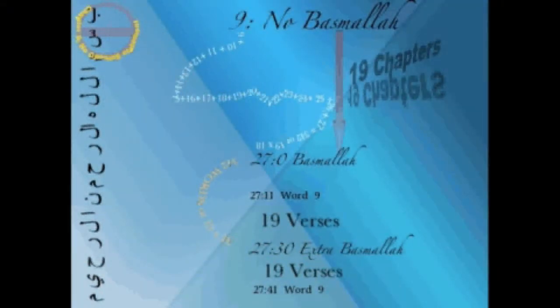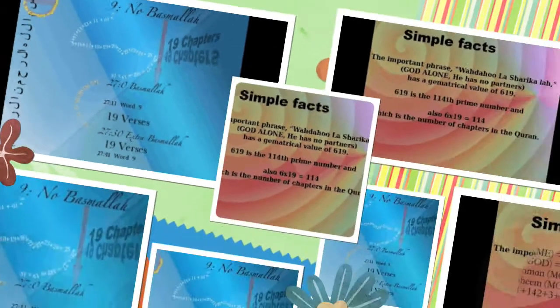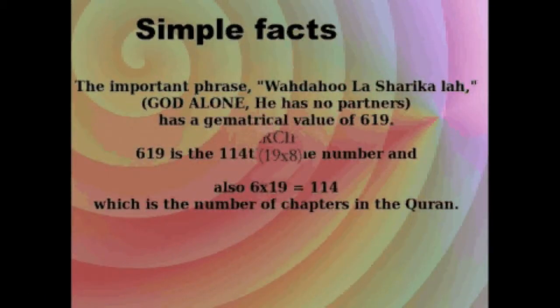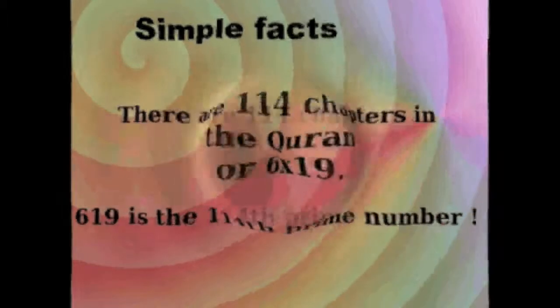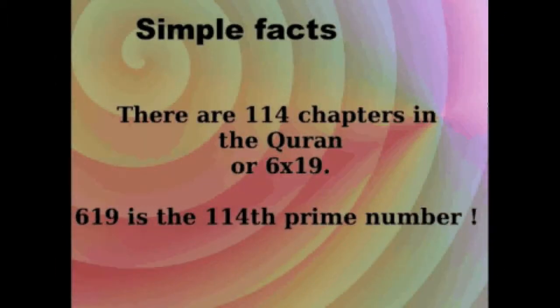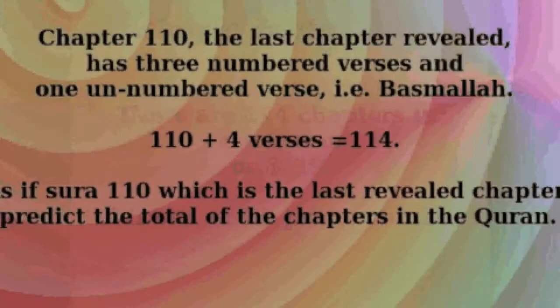Had the missing opening statement been in chapter 10 or 8, all these physical facts would not exist. The crucial sentence, Wadahu Lasharik Allah, God alone, He has no partners, has a gematrical value of 619. 619 is the 114th prime number, and also 6 times 19 equals 114, which is the number of chapters in the Quran.